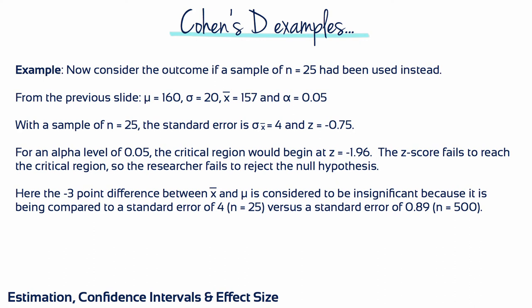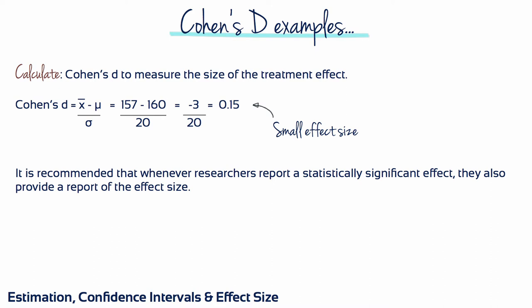Now consider the outcome if a sample of N equals 25 had been used instead. With a sample of 25, the standard error is 4, and our Z-score is minus 0.75. This Z-score fails to reach the critical region, so the researcher fails to reject the null hypothesis. The three-point difference between the sample mean and the population mean is considered to be insignificant because it's being compared to a standard error of 4 versus a standard error of 0.89. Let's measure Cohen's D to measure the effect size of this treatment.